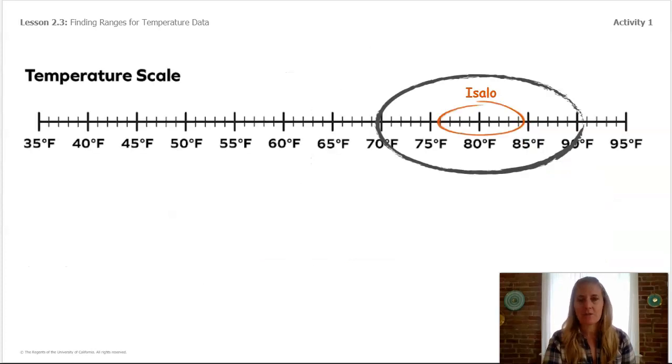Here is a temperature scale we could use. Isalo only falls between 76 and 84 on the scale. So, I drew an orange circle there.